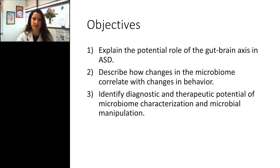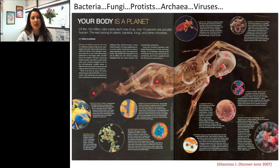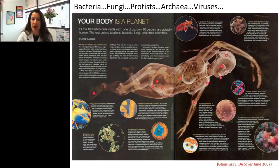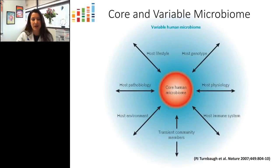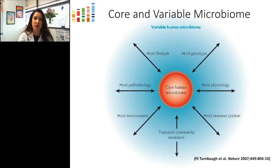Our fascination with the microbiome started well over a decade ago. An illustration published in Discover in 2007 depicted our various co-inhabitants, and at that point we were just beginning to appreciate that we were less human than originally thought — human cells make up only about 10% of the cells in our body, with the remainder being bacteria, fungi, protists, archaea, and viruses. Early on we adopted the concept of a core human microbiome influenced by lifestyle, environment, and genetics, but as science evolved, that core continues to shrink as more variables are discovered.